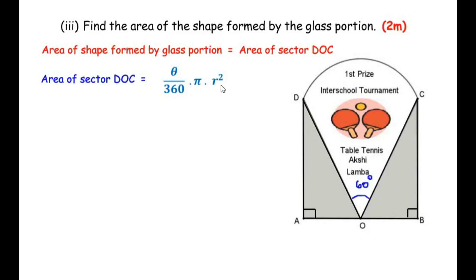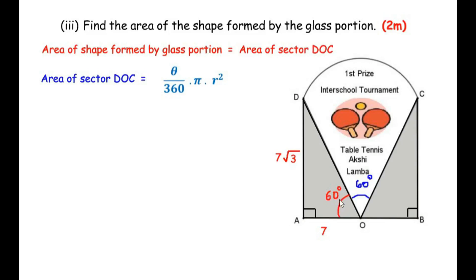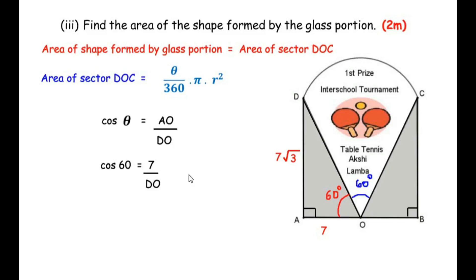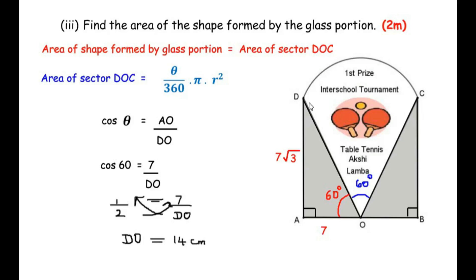DO and CO are the radii of the sector. We use the cos trigonometric ratio. From part 1: DA = 7√3, AO = 7, θ = 60°. cos θ = adjacent/hypotenuse, so cos 60° = AO/DO, giving 1/2 = 7/DO. Cross multiplying: DO = 7 × 2 = 14 cm. So the radius is 14 centimeters.